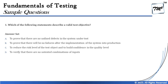Option B also contradicts Principle Seven — the absence of error fallacy. I may find and fix defects, but if the requirements are not fulfilled it may not make any sense. I cannot assure that there will be no failures, so I cannot make any such statement as one of the key objectives of testing.